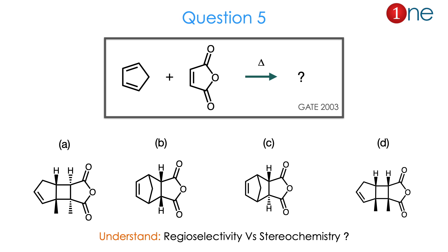Question 5. The starting material is cyclopentadiene and maleic anhydride. You are using heat. They ask you to find the product. The question is about which addition occurs — whether both double bonds are involved or only one, and whether the addition is syn or trans. The whole question is about regioselectivity and stereochemistry. The answer is B.